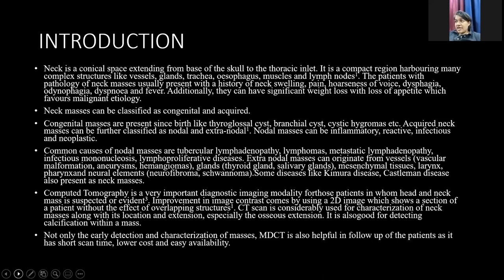Neck masses can be classified as congenital and acquired. Congenital masses are present since birth, like thyroglossal cyst, branchial cyst, and cystic hygroma. Acquired masses are further classified as nodal and extranodal in origin. Nodal masses can be inflammatory, reactive, infectious, and neoplastic. Common causes of nodal masses are tubercular lymphadenopathy, lymphoma, and metastatic lymphadenopathy.